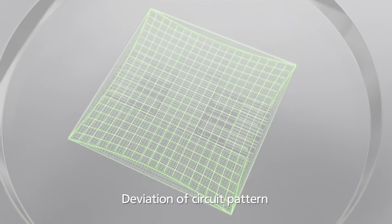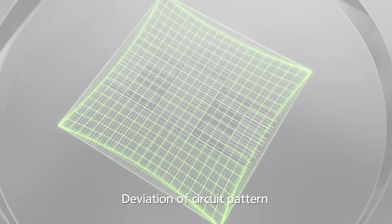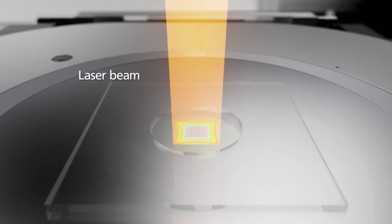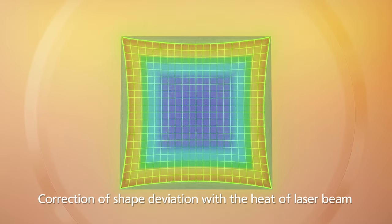Circuit pattern deviation occurs in the lower layer. Based on this shape, the heat of the laser beam is adjusted to correct this deviation.